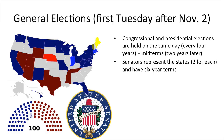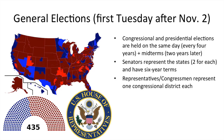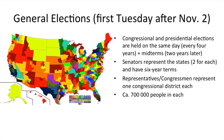Senators represent the states — two for each — and they have six-year terms, while representatives or congressmen each represent one congressional district. There are more congressional districts in very populous states, because each congressional district is supposed to have about the same number of people — about 700,000 people in each. A few states have only one congressional district for the entire state.